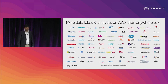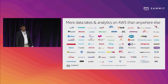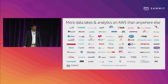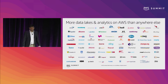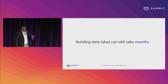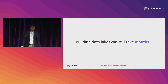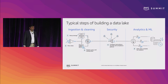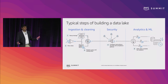On AWS we have more customers building more data lakes and doing analytics than anywhere else — the running number is around 10,000 or more data lakes on AWS today. But even still, with all the services we have, building data lakes can take months. Why? Let's take a look at the typical steps in building a data lake. There are actually three different steps, handled by three different types of users or personas.